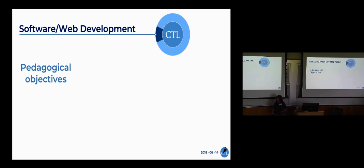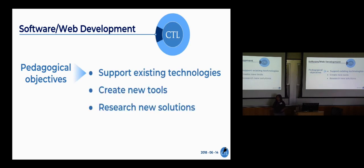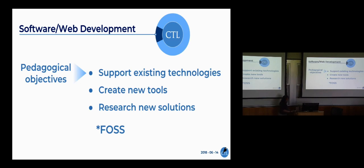Normally a faculty or group of faculty will come in with a set of pedagogical objectives — they have an idea, they want to use some technology but aren't sure how it relates to teaching their students. From there, my group, along with the other 35 people, looks at the technologies they're using. We either support existing technology or create new tools to achieve their idea. We also do research for new solutions, and as academics, research is a big thing for us. We're big on free, open source software — we like free.